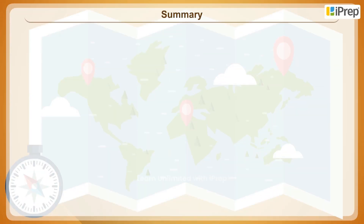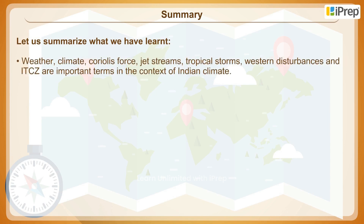Let us summarise what we have learnt. Weather, climate, Coriolis force, jet streams, tropical storms, western disturbances and ITCZ are important terms in the context of Indian climate.